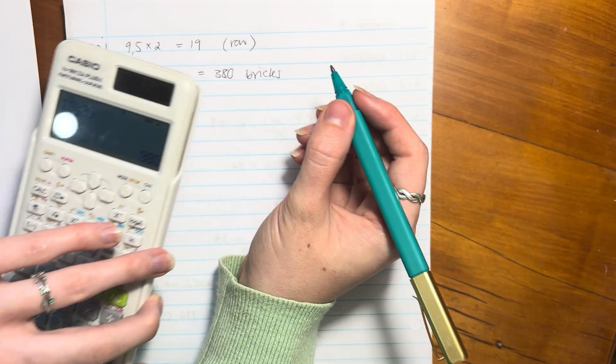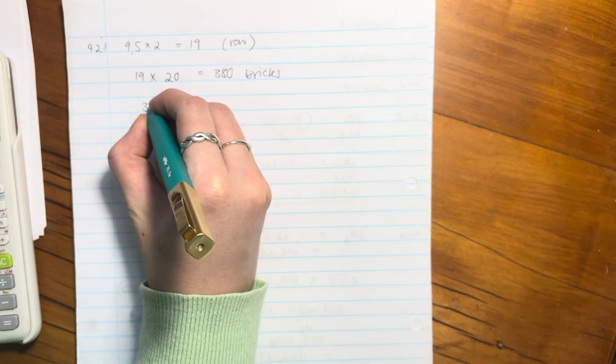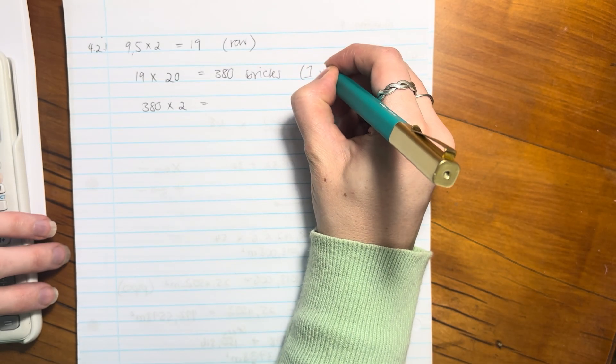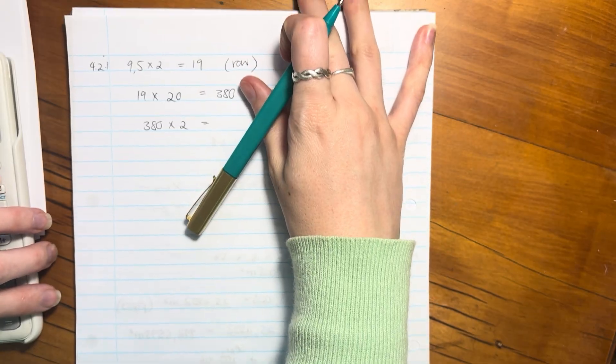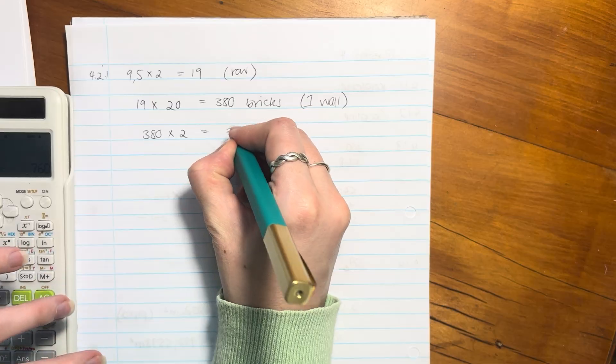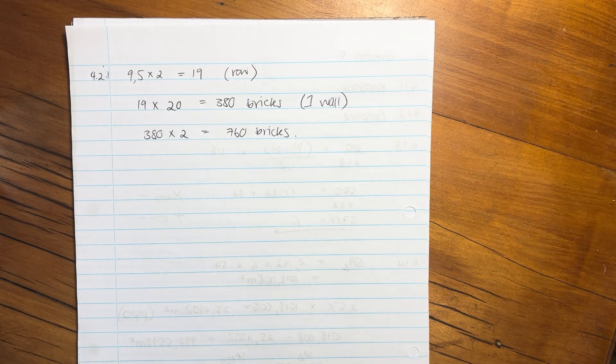But the problem is, well it's not a problem, but we know there's two walls. So we actually need to say 380 times 2 because we have two walls. So she's going to need 760 bricks.